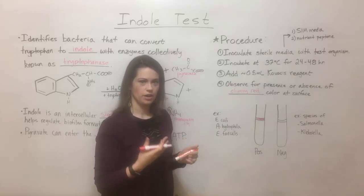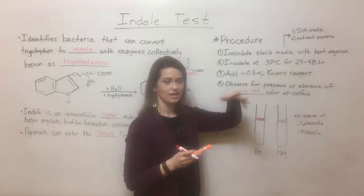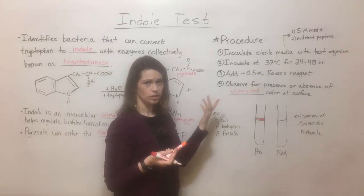That's because the chemicals in Kovac's reagent can react with indole if it's present to create a dye known as the rosindole dye, and that has a cherry red color.